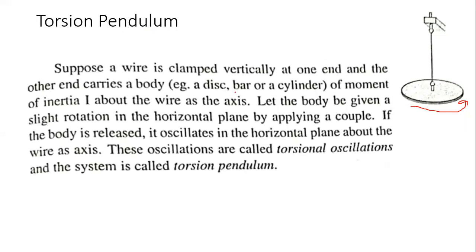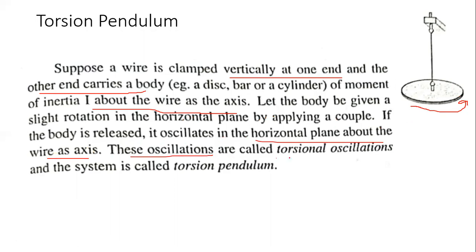Suppose a wire is clamped vertically at one end, and the other end carries a body — it can be a disk, bar, or cylinder — with a moment of inertia about the wire axis. Let the body be given a slight rotation in the horizontal plane. If the body is released, it oscillates in the horizontal plane about the wire axis. These oscillations are called torsional oscillations, and the system is called a torsional pendulum.